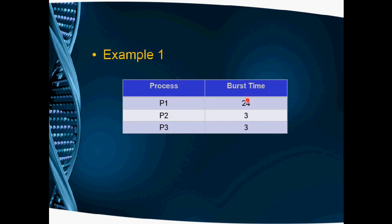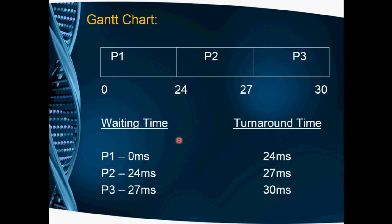Now we will see an example. We have processes P1, P2, and P3 with burst times: P1 is 24 milliseconds, P2 is 3 milliseconds, and P3 is 3 milliseconds. In FCFS, we execute them one by one in order. From the Gantt chart, we can find the waiting time and turnaround time.